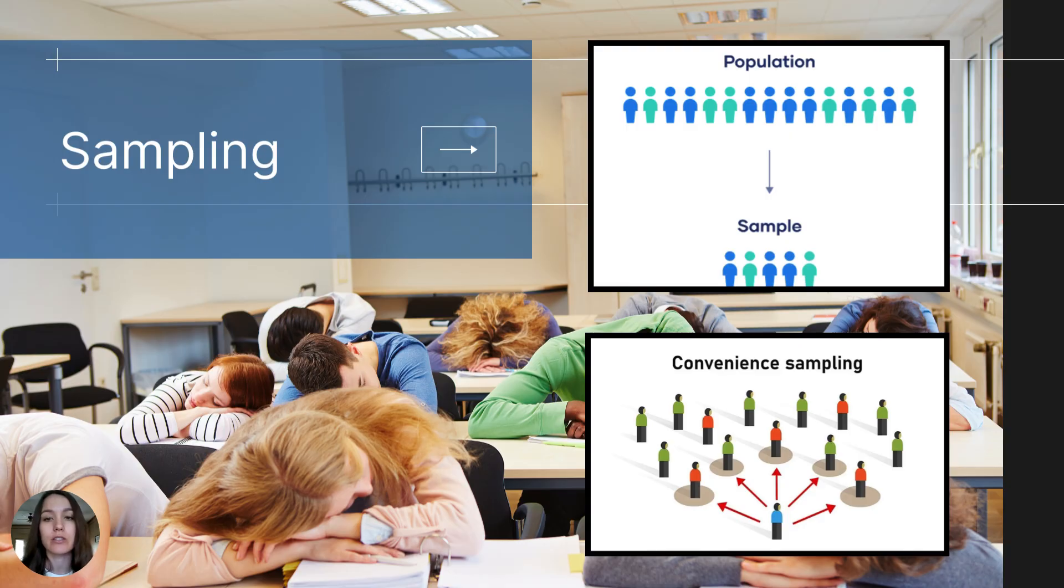So when you are evaluating research studies, be sure to check how the researcher selected their sample. It's important that the sample is both random and representative. So a random sample is when every individual in the population has an equal chance of being selected or chosen for the study. And this reduces sampling bias.